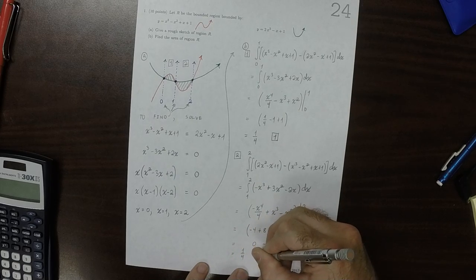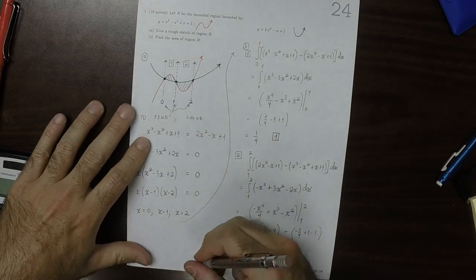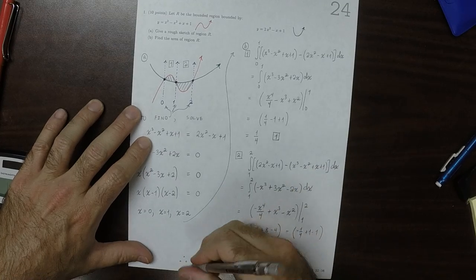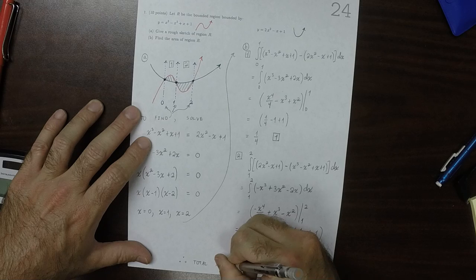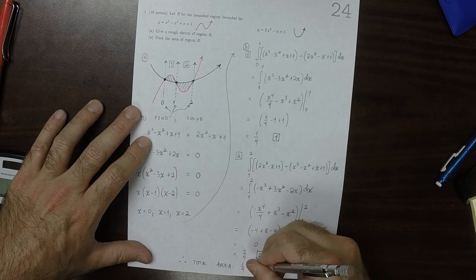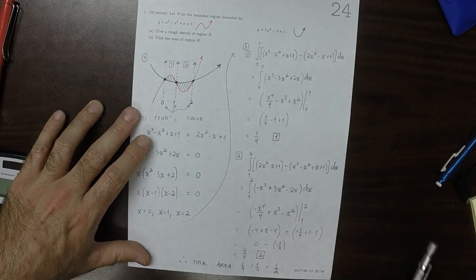Both regions had area 1 fourth. And therefore, the total area is 1 fourth plus 1 fourth, which is a half.